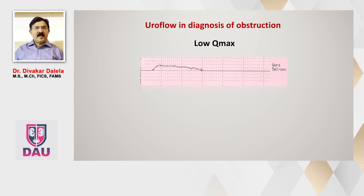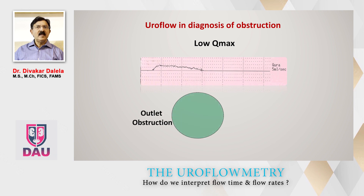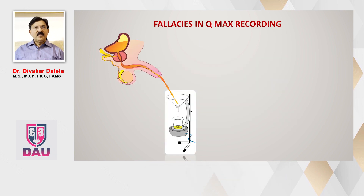Uroflowmetry is a very basic investigation for diagnosing a patient who has bladder outflow obstruction. When you ask such a patient for a uroflowmetry report, you get what is called a low Q-max graph. This low Q-max graph can result either from obstruction at the bladder outlet — due to many diseases you already know — or from underactivity of the detrusor. There are also patients with a mixture of both. So there are three kinds of clinical combinations that produce a low Q-max.